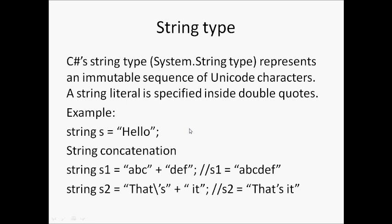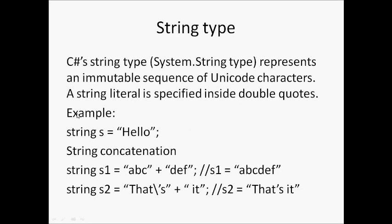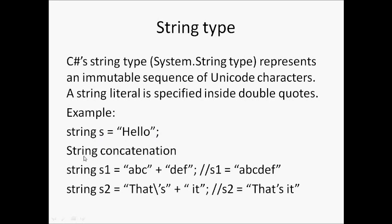String type. C-Sharp's string type (System.String type) represents an immutable sequence of Unicode characters. A string literal is specified inside double quotes. Example: string s equals "Hello". String concatenation: string s1 equals "abc" plus "def" - s1 equals "abcdef".